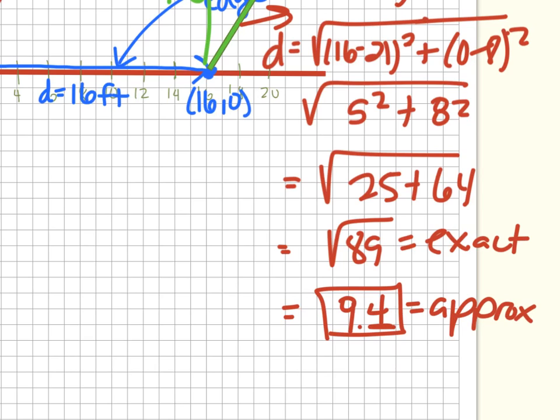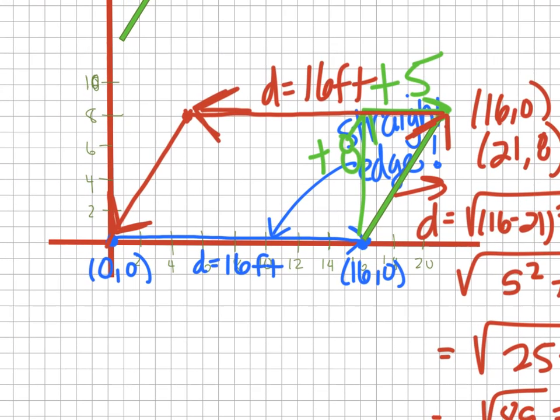We'll take that distance and record it on the opposite side as well, because it turns out that in parallelograms, opposite sides are congruent. So we have approximately 9.4 feet for that side, 16 feet for the opposite sides.